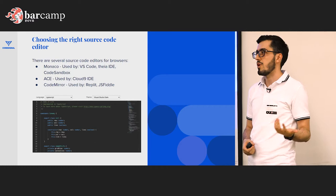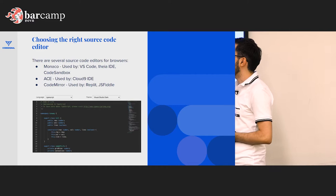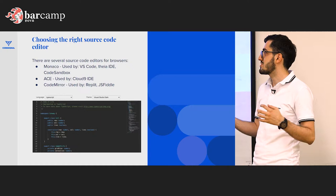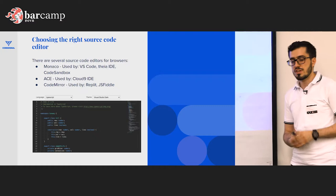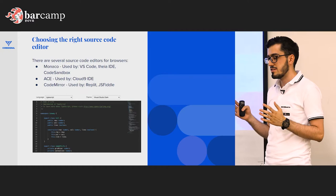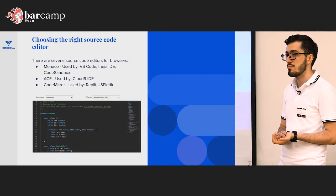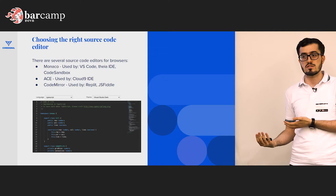All other powerful IDEs like Theia and CodeSandbox use Monaco, because it provides all the functionality you might need for auto-completion and other things. If you use ACE, it has great syntax highlighting, but you have to implement everything else yourself. CodeMirror is used by Replit and JSFiddle. We were using CodeMirror before and had to migrate everything to Monaco, because that's the only state-of-the-art solution that can provide a powerful experience and is designed to be used for IDEs.